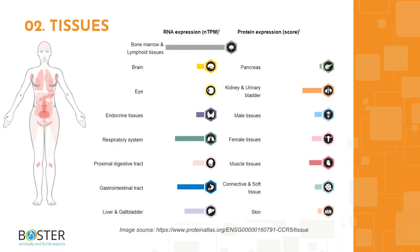Topic 2: where is CCR5 expressed? CCR5 RNA expression is present in the lymphoid tissues, gastrointestinal tract, female tissues, lungs, and some T-cells, macrophages, and dendritic cells. You can find more information on proteinatlas.org to check out which cell lines express CCR5 and which ones don't.